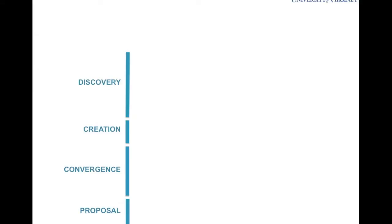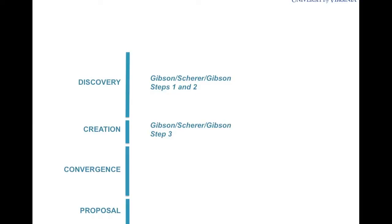On this slide I introduce some terms that we'll use in this presentation and map them to terms used in Gibson, Shearer, and Gibson. You can think about the first phase of activities as discovery. Step one in Gibson, Shearer, and Gibson is goal development as part of discovery. Step two is creation, which is alternative generation. Convergence focuses on ranking, and the proposal is about the action step. You'll see where iteration comes in in a minute.